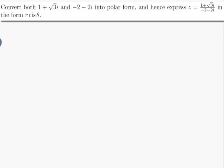So what is polar form? That would be the r cis theta. So I need to write both of those numbers as r cis theta and then I should hopefully be able to divide them by using the rules of cis.